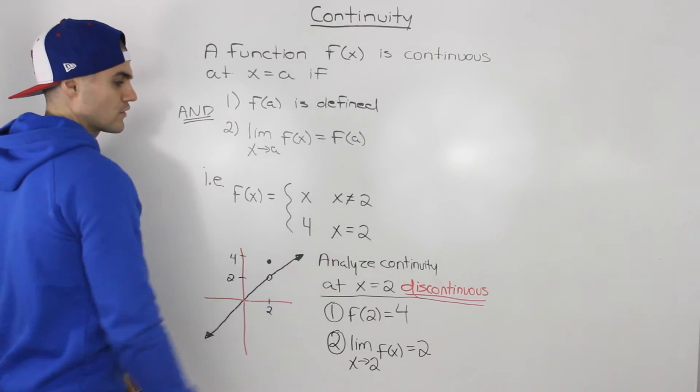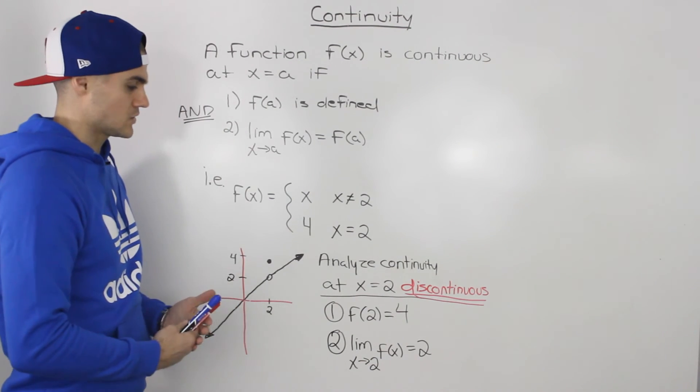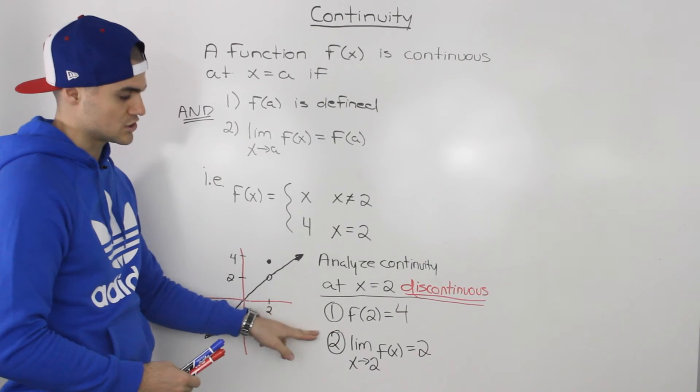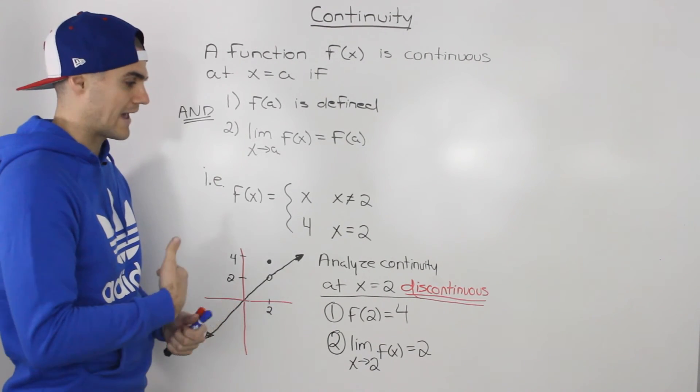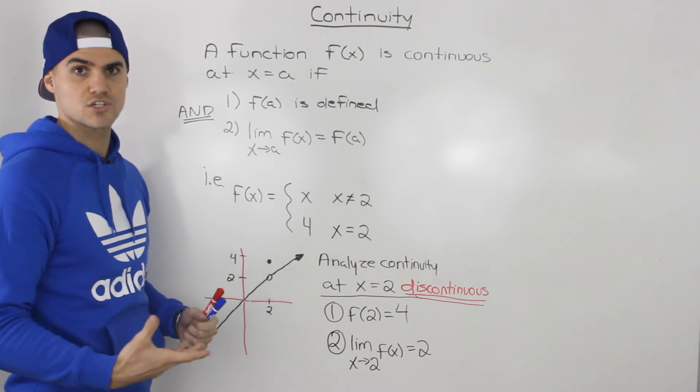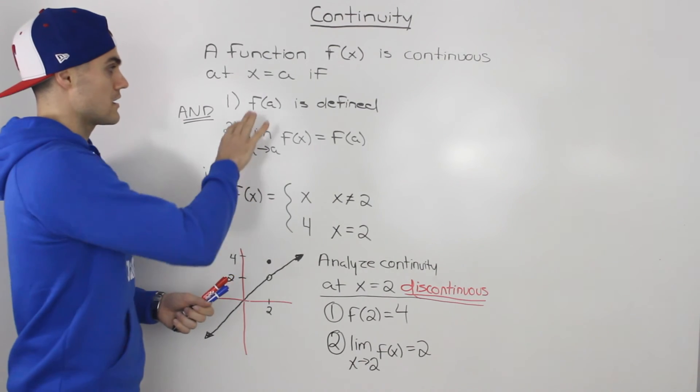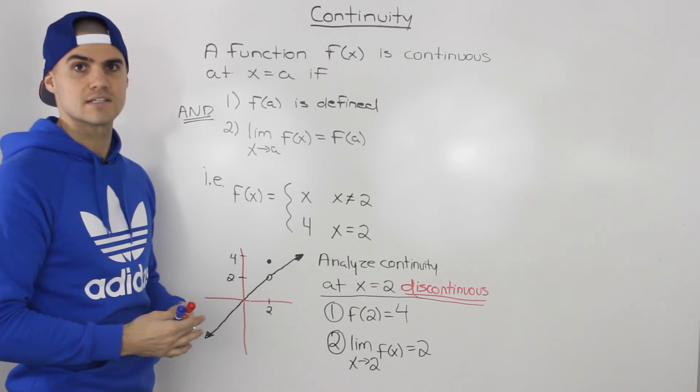Therefore, the function is discontinuous. But to prove that it was discontinuous, we had to show these two conditions and show that they weren't equal. So whenever they're asking for you to analyze the continuity of a function, they always want you to prove these two conditions. If they pass, then the function is continuous. If they don't, then it's discontinuous.